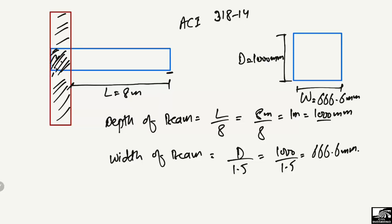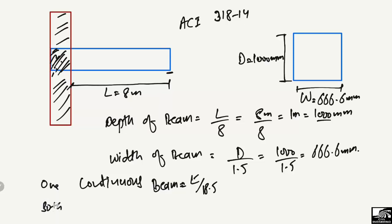ACI also provides formulas for continuous beams. For a one-end continuous beam, the minimum depth formula is L divided by 18.5, where L is the beam length. For a both-ends continuous beam, the formula is L divided by 21. These formulas allow you to find the minimum depth and width for all standard beam support conditions.